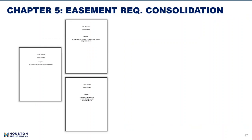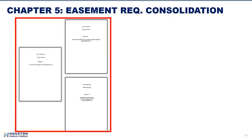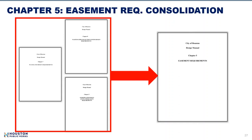During review, it was identified that easement requirements were scattered throughout the waterline, wastewater line, and stormwater chapters. To make requirements easier to navigate, we moved easement requirements from those chapters to Chapter 5. For clarity, some reference article numbers were added to link the two chapters. Where duplicate requirements existed, they were removed. For example, requirements for water meter easements were duplicated in Chapter 5 and removed from Chapter 7.